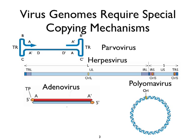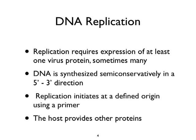Replication requires the expression of at least one virus protein in every system we know about, meaning the virus genome must be transcribed prior to initiation of DNA replication. Some viruses encode many proteins, but in each case studied, no assembly of all known virus replication proteins is sufficient — there's always some contribution from the host. DNA is synthesized semi-conservatively in a 5' to 3' direction, initiating at a defined origin using a primer that can be RNA, DNA as in parvovirus, or a protein as in adenovirus.